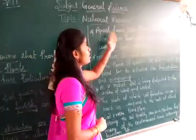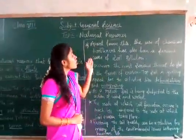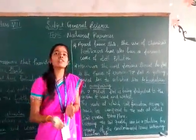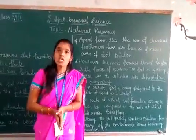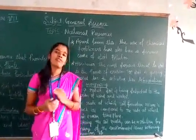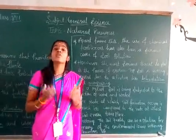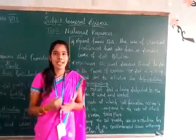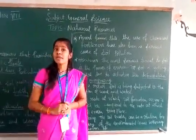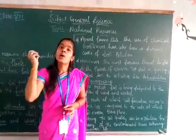Apart from salinization and water logging, the use of chemical fertilizers has also been a serious cause of soil pollution. Nowadays, we are using more chemical fertilizers, pesticides, and herbicides to protect agricultural crops from insects and micro animals. These chemical fertilizers also affect the quality of soil and make the soil polluted.